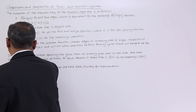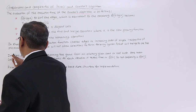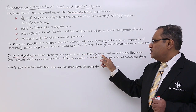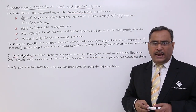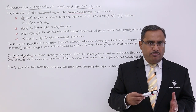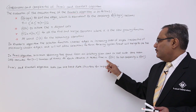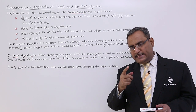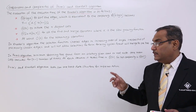Now let us come to Prim's algorithm. Prim's algorithm minimum spanning tree grows from an arbitrarily given seed or root node. The main loop executes for n minus 1 number of times because if there are n number of nodes, n minus 1 edges are to be selected to form a tree. At each iteration it takes Θ(n) time, so the net complexity of Prim's algorithm will be Θ(n²). Both Prim's and Kruskal's algorithm can use a heap data structure for their implementations.